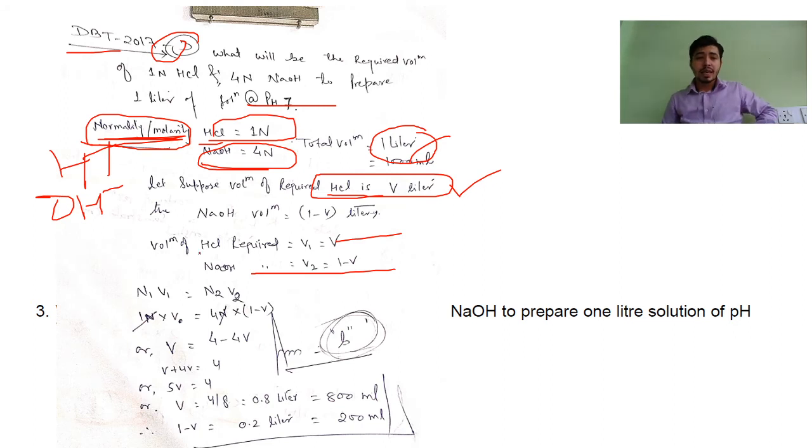So n1 is the normality of HCl, which is 1. Its volume is V. And for NaOH, n2 is 4, and its volume is 1 minus V.